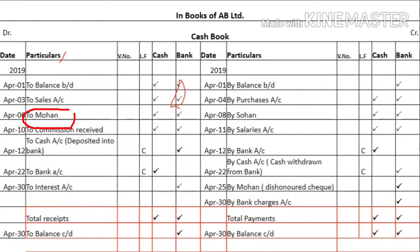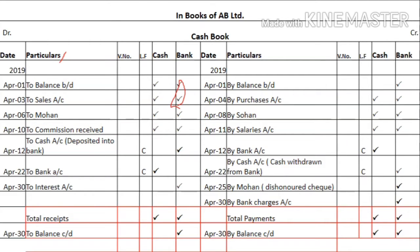If you have received some amount from Mohan, the amount received in cash is written in the cash column; if received by cheque, it goes in the bank column. Similarly, commission received in cash goes in the cash column, and if received by cheque, it goes in the bank column. Next, if you have deposited cash into the bank, it will affect both the cash column and the bank column.